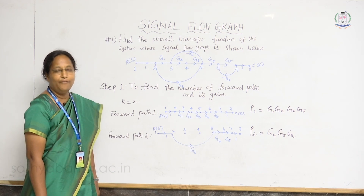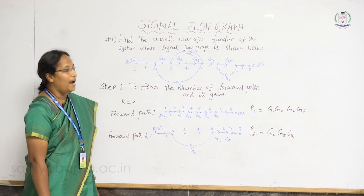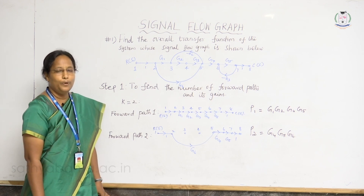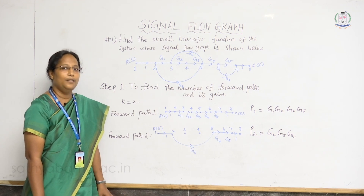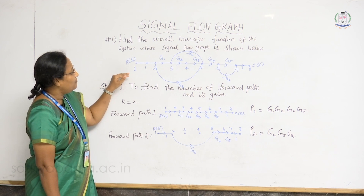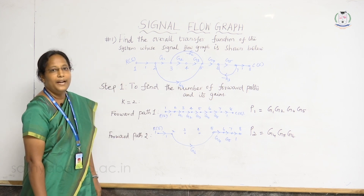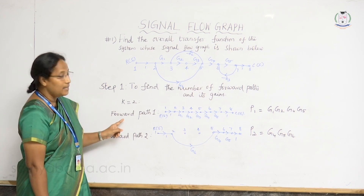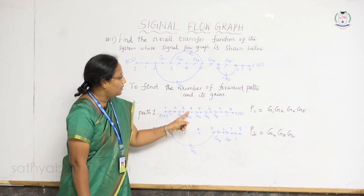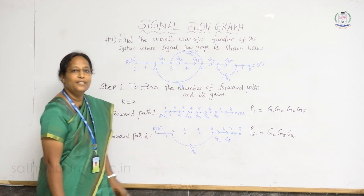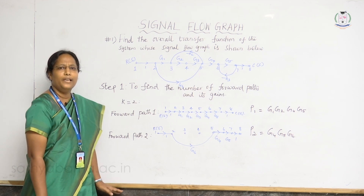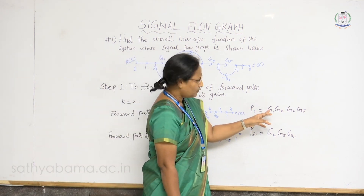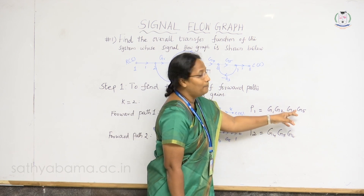Step 1 is to find the number of forward paths and their gains. A forward path starts from the input node and ends at the output node along the direction of the branches without passing any node more than once. In this given SFG there are two forward paths, so k = 2. The first forward path goes from 1 to 2, 2 to 3, 3 to 4, 5, 6, 7, and 8. Its forward path gain P1 equals G1 × G2 × G4 × G5.